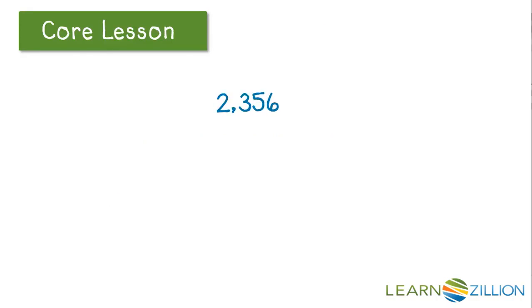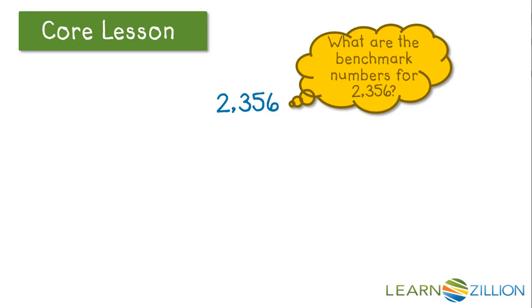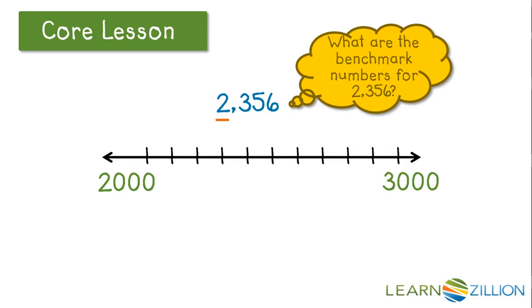Let's look at another number. What are the benchmark numbers for 2,356? Again, there's more than one solution. If we focus on the 1,000's, the benchmark numbers would be in the 1,000's. We would say 2,000 and 3,000 because 2,356 is in between those numbers. We would count by 100's—100, 200, 300—to get 2,356.